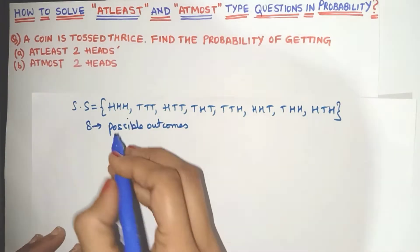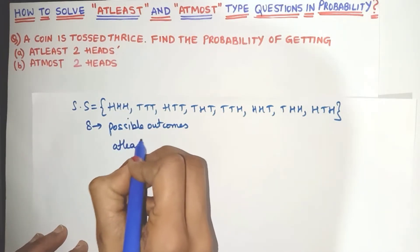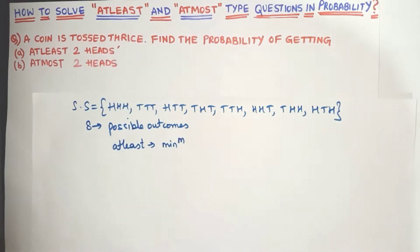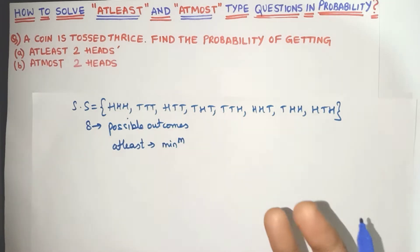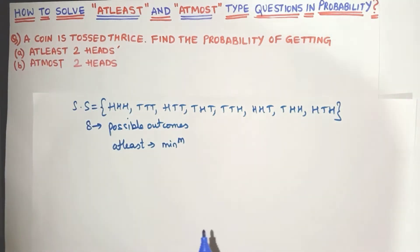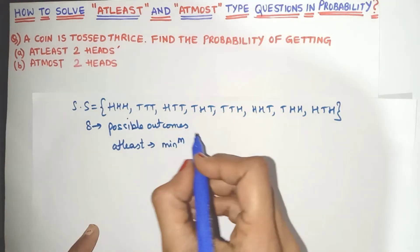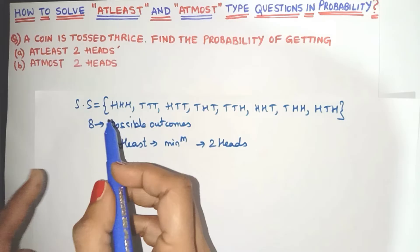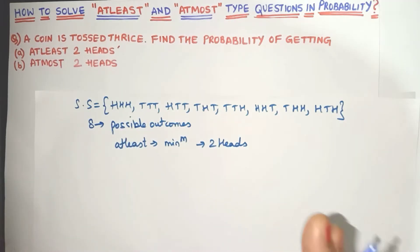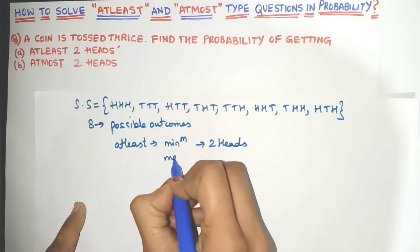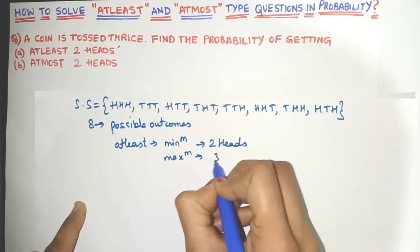Now we need at least two heads. The word 'at least' means minimum. For example, if we say 'please give me at least five chocolates,' that means 'please give me minimum five chocolates.' So here, 'at least two heads' means minimum two heads. Maximum can be anything, but since we are tossing the coin three times, we can get maximum only three heads.